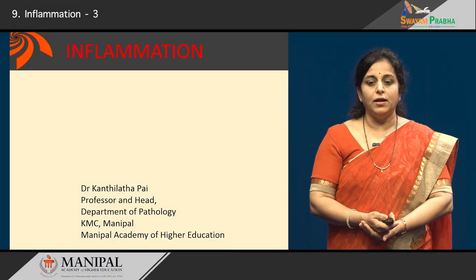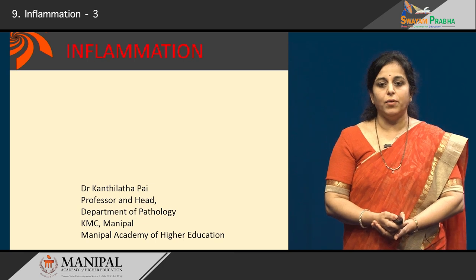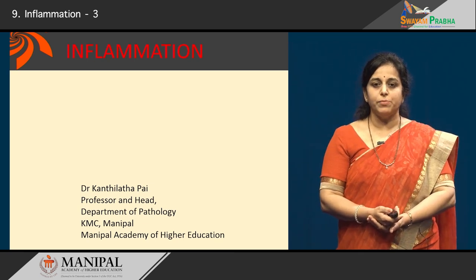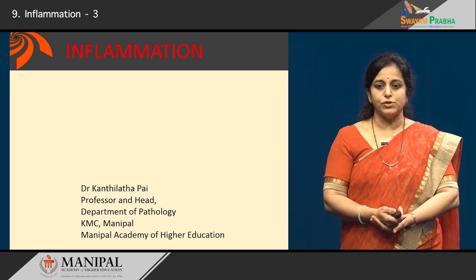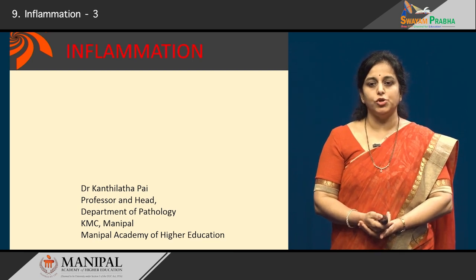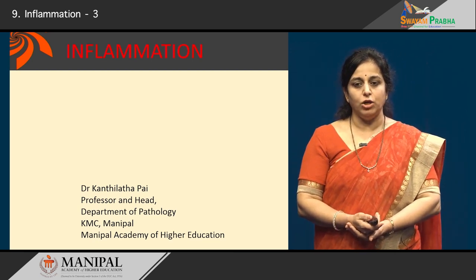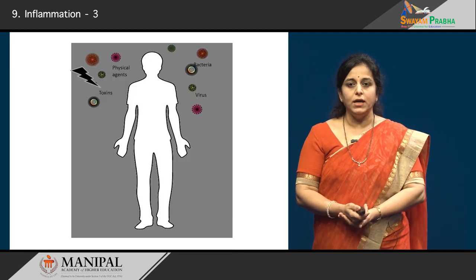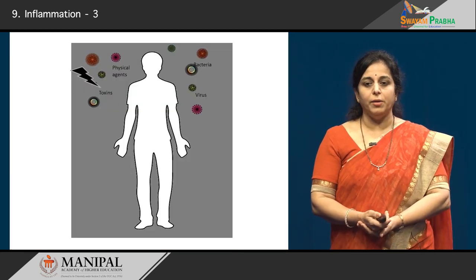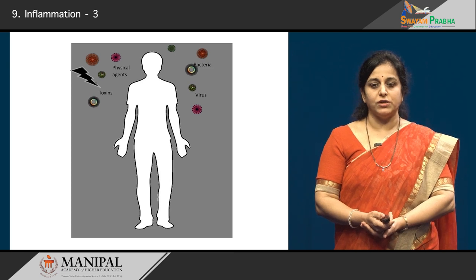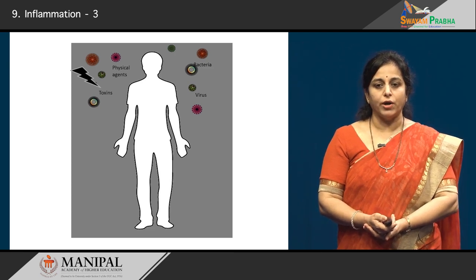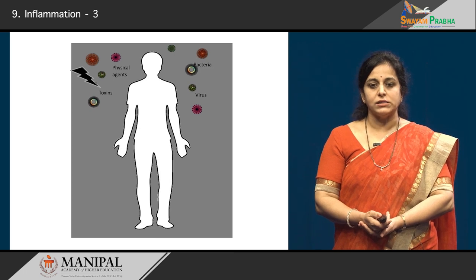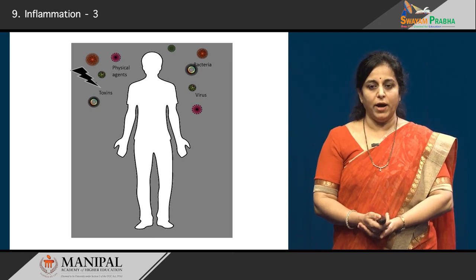Hello dear students, today we will learn about a basic tissue reaction called inflammation, which is a protective response of the body towards any injurious agent that gains entry into the body. The human body is constantly surrounded by various kinds of injurious agents which include microorganisms, physical agents, and toxins that are present in our environment.